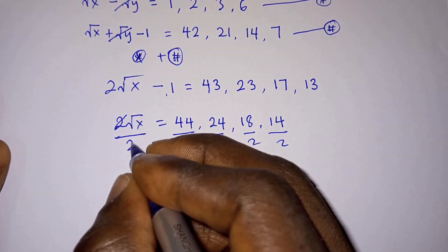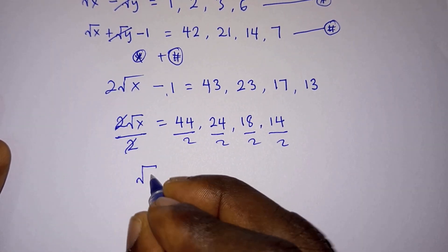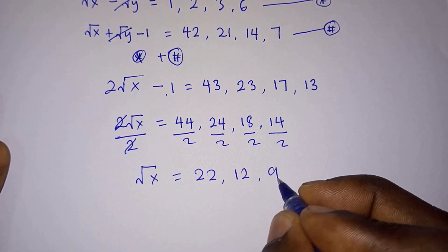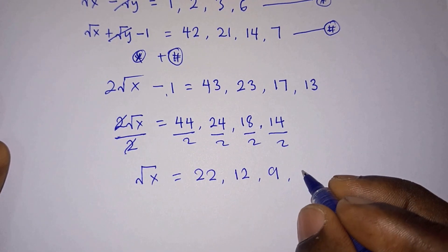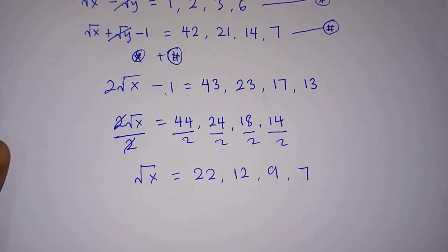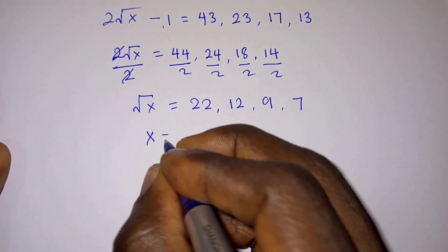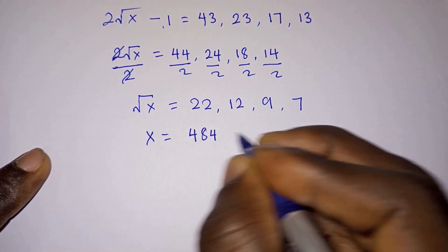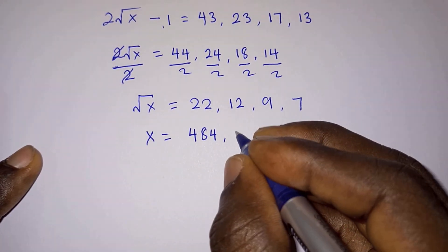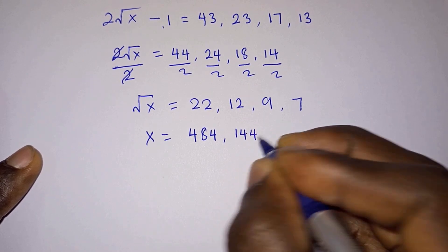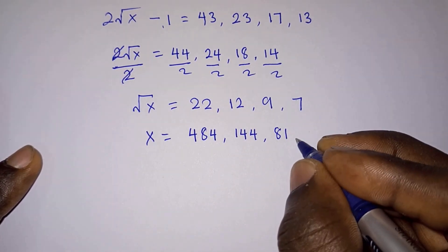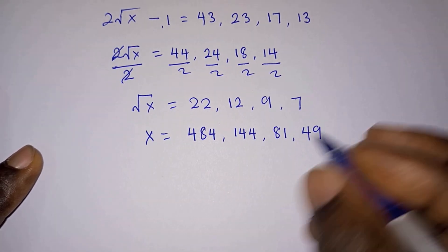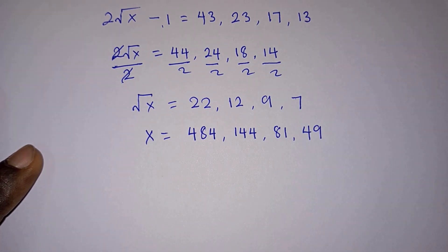Dividing through by 2, we get √x equal to 22, 12, 9, and 7. Squaring each, x equals 484, 144, 81, and 49 respectively.